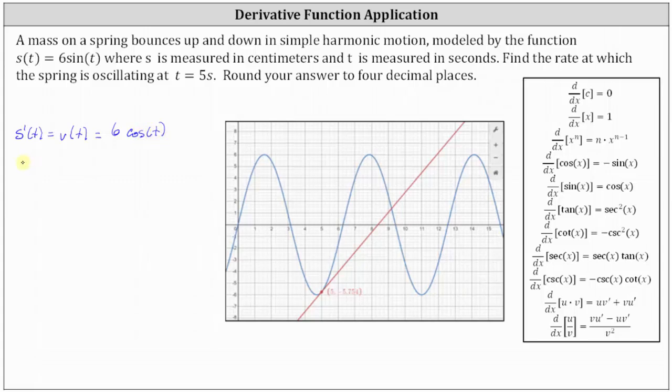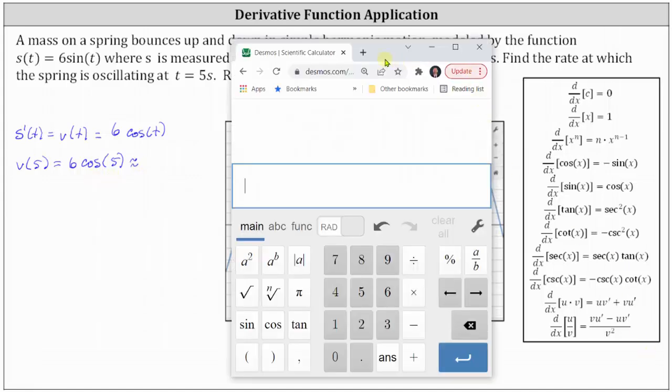And now we need to evaluate the velocity function at t equals 5 seconds, which we can see is 6cos(5). We need to evaluate 6cos(5) on a graphing calculator. We do need to make sure the calculator is in radian mode. Using the Desmos scientific calculator, we toggle between radian and degree mode by clicking here.